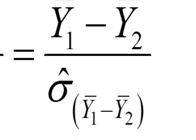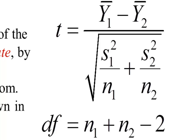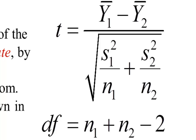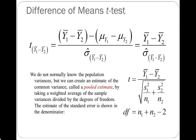Looking at the expanded t-statistic, under the radical sign we have the variance of the first sample divided by its sample size, plus the variance of the second sample divided by its sample size, and then we take the square root of all that. This is analogous to the standard error for single sample means — it indicates the sampling error of the difference of two means. Because we're estimating two different means, we lose two degrees of freedom: df equals n sub one plus n sub two minus two.